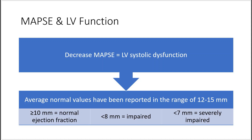If it's less than 8 millimeters, it means impaired ejection fraction. This makes sense — if the wall is not really moving that well, then that means the patient is in heart failure, and therefore the excursion will be low. But if the patient has a normal ejection fraction, then the walls are contracting with each beat very strongly, and there's high displacement. So a higher MAPSE means approximately normal ejection fraction.